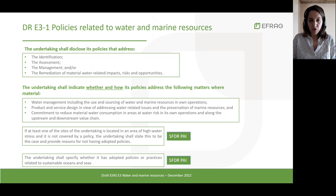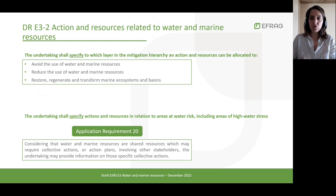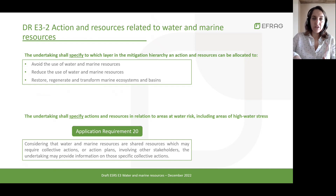There are also two other elements linked to SFDR PAI to be disclosed in a mandatory manner: the policies in relation to sites located in areas of high water stress, and the policies or practices related to sustainable oceans and seas. Regarding actions and resources, it follows the same architecture — linked to the policies that have been implemented, which are themselves linked to the material IROs. We will again expect only actions and resources in relation to those material impacts, risks and opportunities.